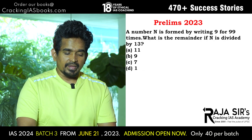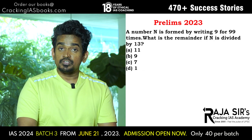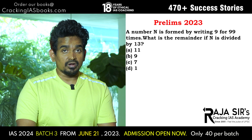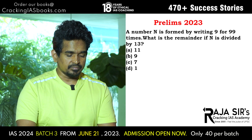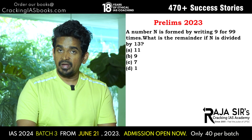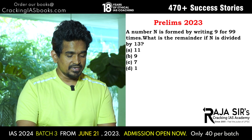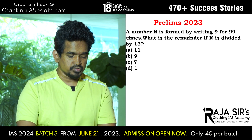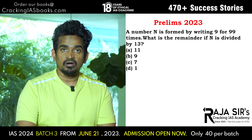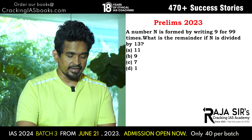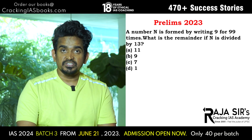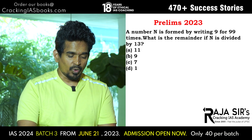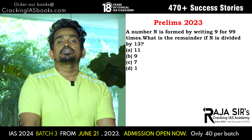The next problem: A number N is formed by writing 9 for 99 times. What is the remainder if N is divided by 13? Option A: 11. Option B: 9. Option C: 7. Option D: 1.